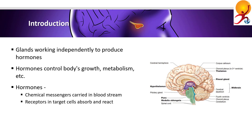Hormones are chemical messages that are carried in the bloodstream to a target tissue elsewhere in the body, where they must be absorbed into the tissue before they can have an effect. There are two groups of hormones: peptide hormones and steroid hormones.